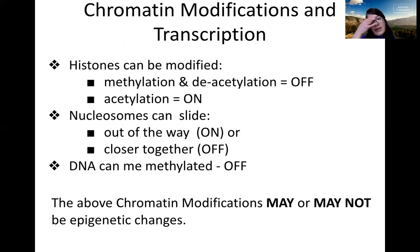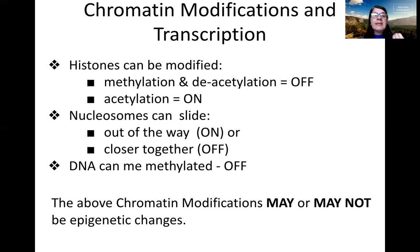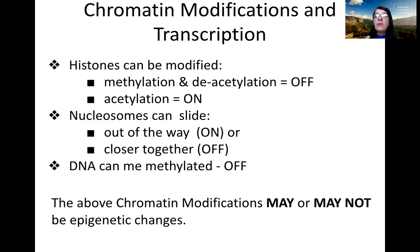Chromatin modifications that influence transcription in summary: histones can be methylated or acetylated. If you add a methyl group, that usually means transcription is off — chromatin is tightly packaged. If histones are acetylated, meaning an acetyl group is added, that usually means chromatin is loose and transcription is on. So if you deacetylate histones — remove the acetylation — you're turning things off. If you methylate them, you also turn things off. You're not required to remember all of these details, just understand that different chemical modifications of histones affect how tightly or loosely chromatin is packaged, and therefore whether genes are transcribed.